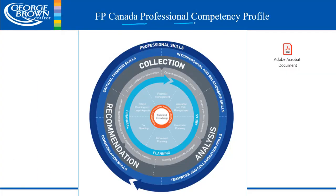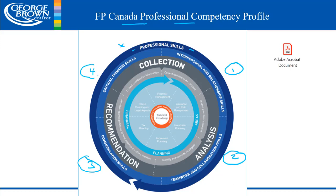Looking at the FBCanada professional competency profile slide, on the outside of the wheel are the professional skills. I'm referencing the version effective January 1st, 2020. There are four professional skills: number one, interpersonal and relationship skills; number two, teamwork and collaboration skills; number three, communication skills; and number four, critical thinking skills.